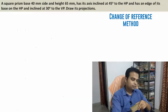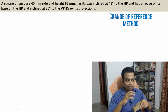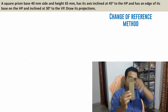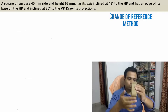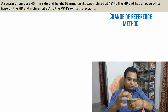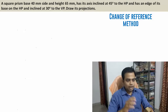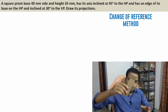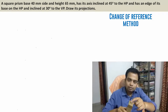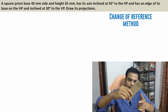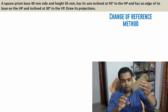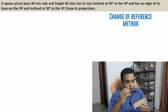The problem goes like this: a square prism with base 40 mm side and height 65 millimeters — so this is a square prism, height 65, with a square top and square bottom, all sides 40 millimeters each. Its axis is inclined at 45 degrees to the HP, so the axis starts from the center bottom to center top, making an angle of 45 degrees with the horizontal plane.